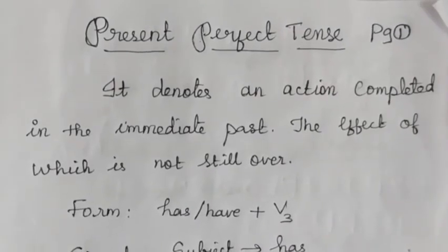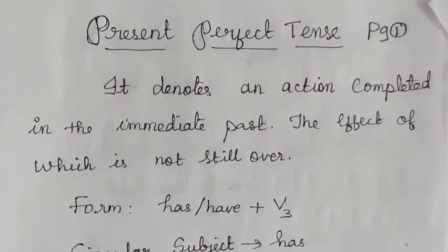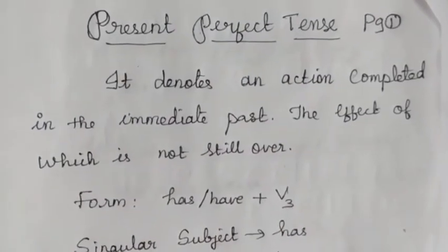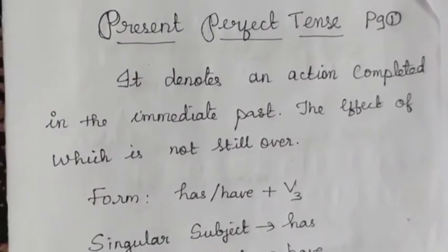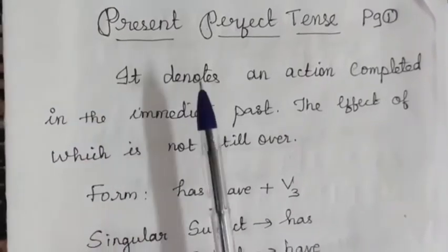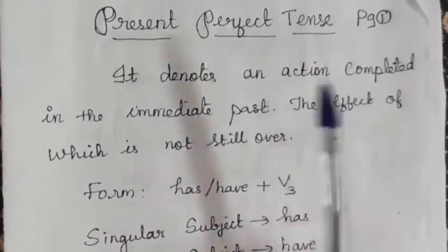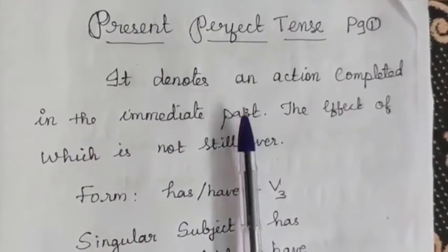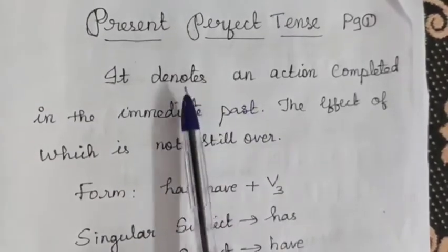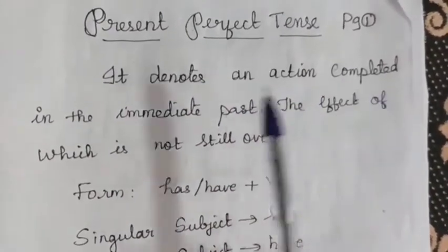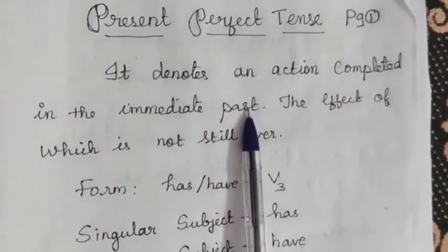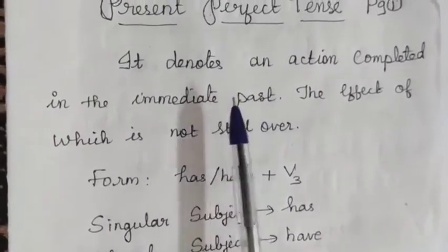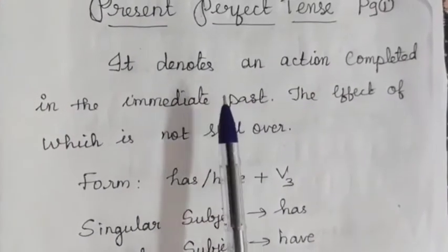Hello children, welcome to today's English class. Today's topic is Present Perfect Tense. Let us study and understand what is present perfect tense. It denotes an action completed in the immediate past.